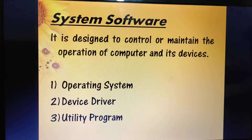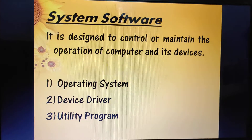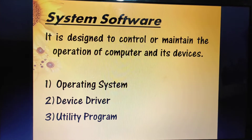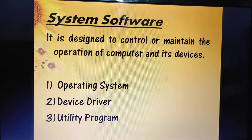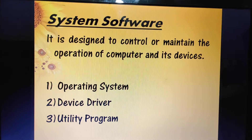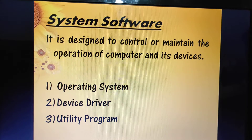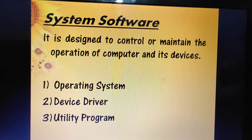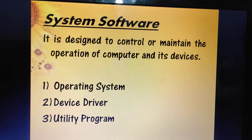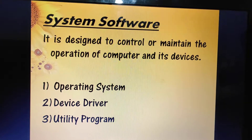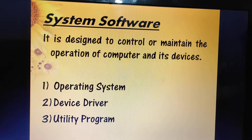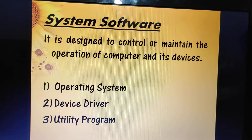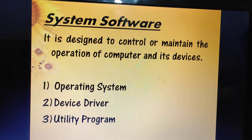The operating system resides in the hard disk of the computer. There are many different operating systems designed for different types of computers, and many have similar functions. The first function is booting — each time you start your computer, the computer loads the operating system from the hard disk into computer memory so that it can be used. This process is called booting.